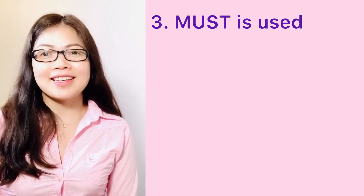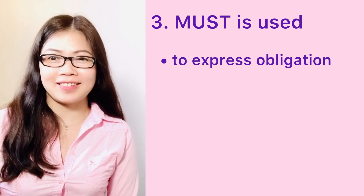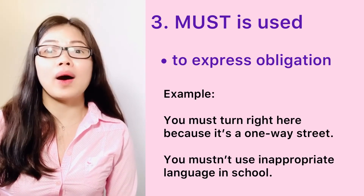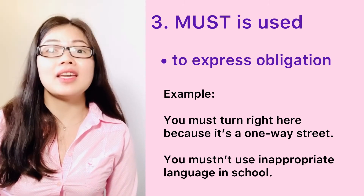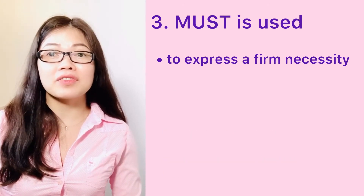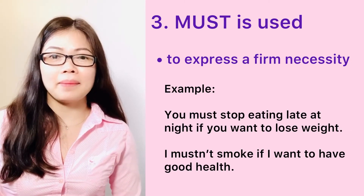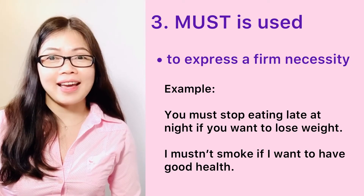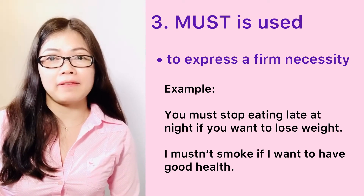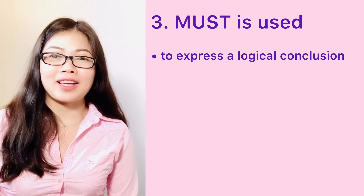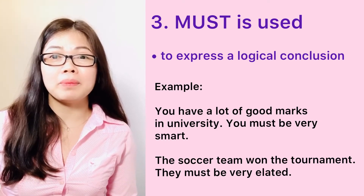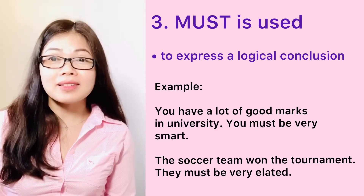Three: must. Must is used to express obligation. For example, you must turn right here because it's a one-way street. You mustn't use inappropriate language in school. To express a firm necessity, for example, you must stop eating late at night if you want to lose weight. I mustn't smoke if I want to have good health. To express a logical conclusion, for example, you have a lot of good marks in university — you must be very smart.